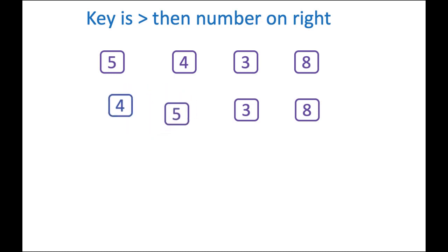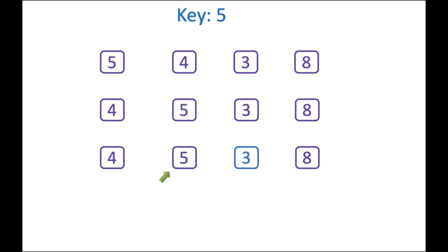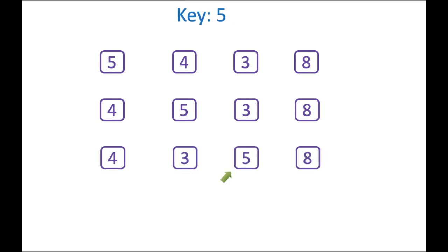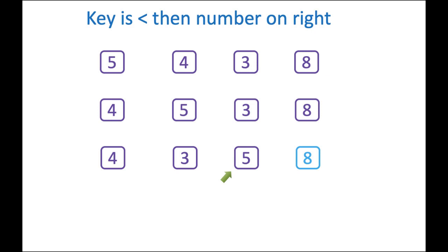After the swap, the current key is still five. We move on to the next iteration and compare the current key with the next number on its right, which is three. Since five is greater than three, we do a swap again. Then we move on to the fourth iteration where the current key is again five and we compare it to the number on its right, which is eight. Since eight is greater than five, we don't swap.